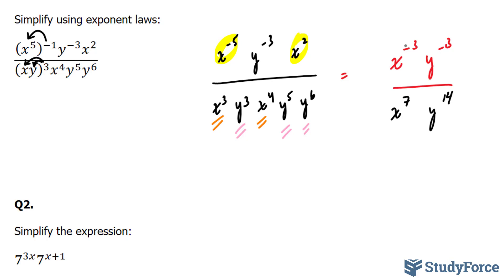So let's subtract negative 3 from 7. Negative 3 minus 7 is equal to x to the power of negative 10. Think about it. Negative 3 minus 7 is equal to negative 10. And also, y to the power of negative 3 over y to the power of 14 means negative 3 minus 14, which is y to the power of negative 17.